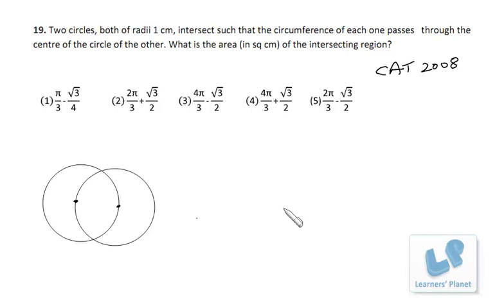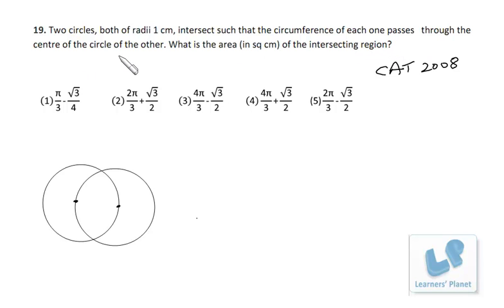Here I solve a problem from the CAT paper 2008. The problem is based on geometry: two circles both of radii 1 centimeter intersect such that the circumference of each one passes through the center of the other. What is the area in square centimeters of the intersecting region? I have drawn the figure over here.